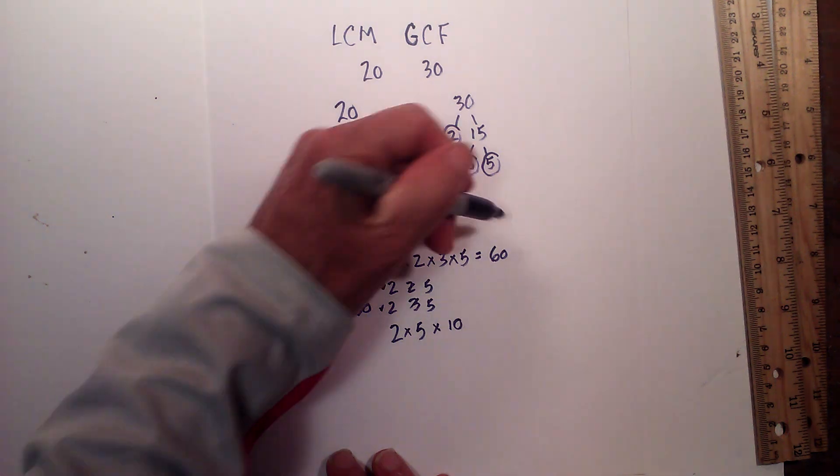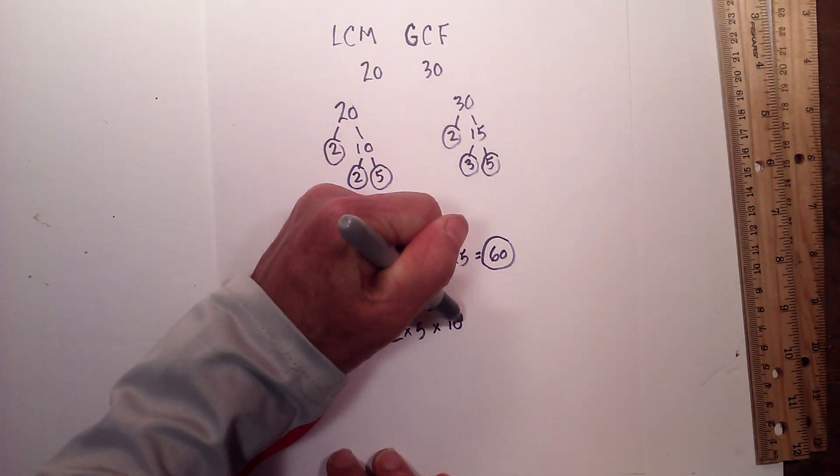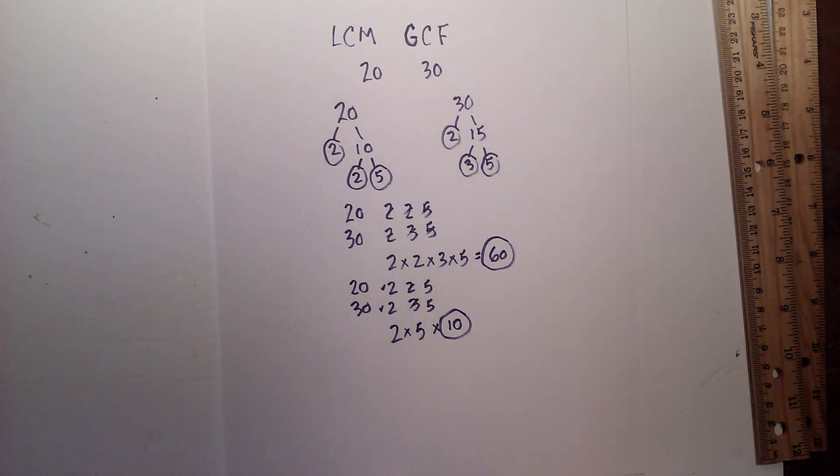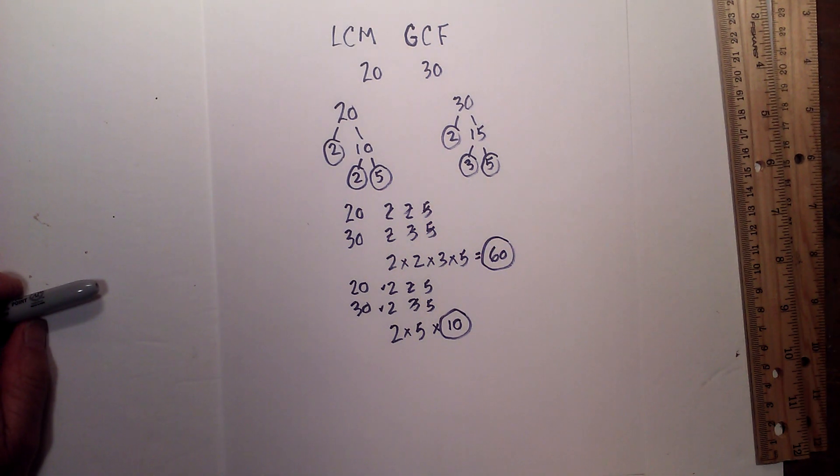So there we go, the LCM which is 60 and the GCF which is 10 of the numbers 20 and 30. Thanks for watching and Moomoo Math uploads a new math and science video every day. Please subscribe and share.